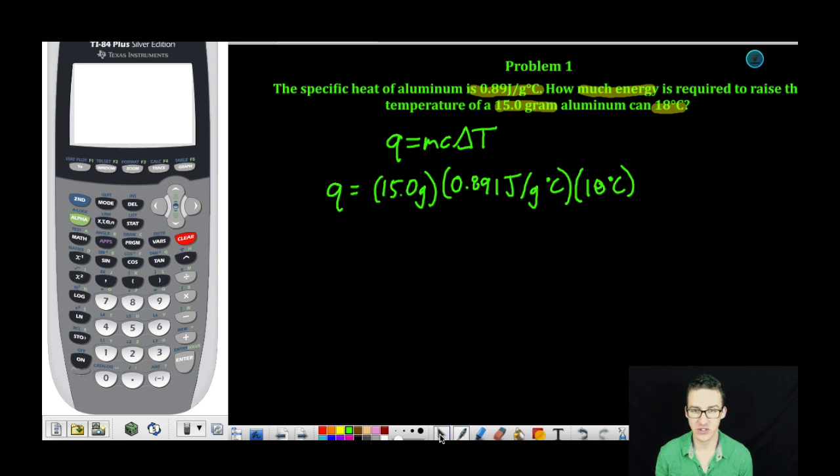So it's just a matter of taking a quick trip to our calculadora. 15.0 times 0.891. Enter. Times 18 equals.